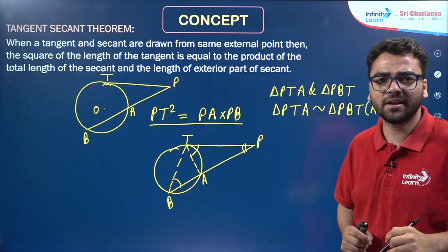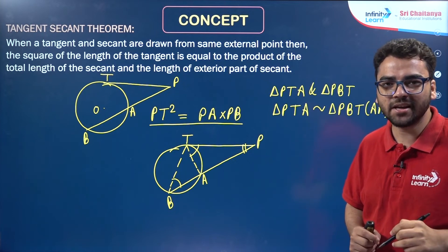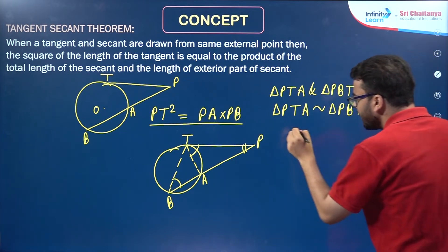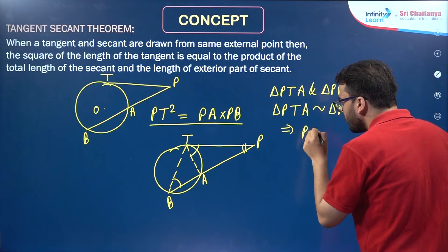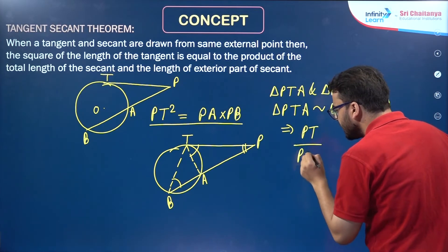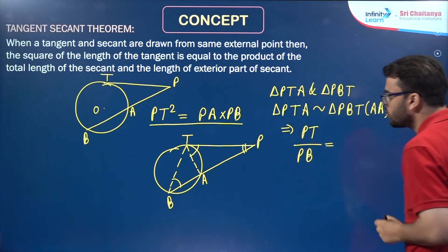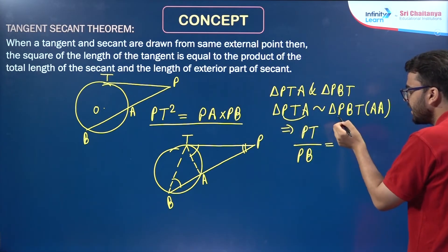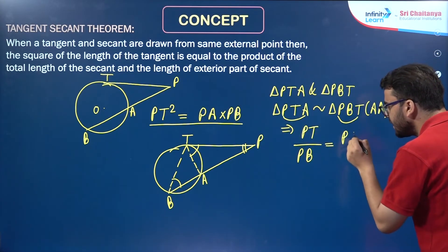If two triangles are similar, the ratio of their corresponding sides are equal. So PT/PB = PA/PT.